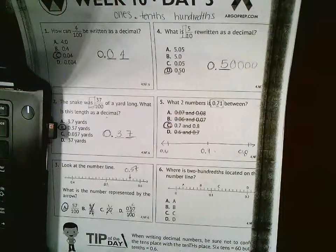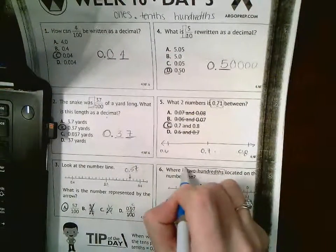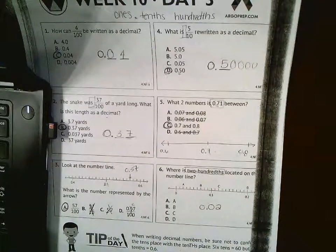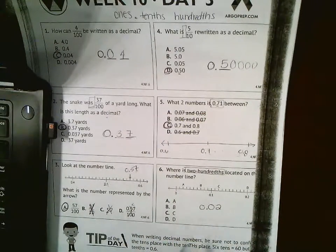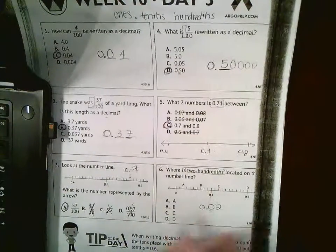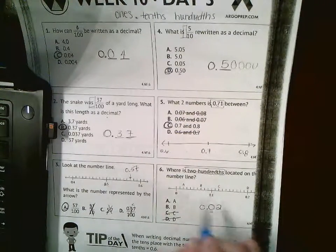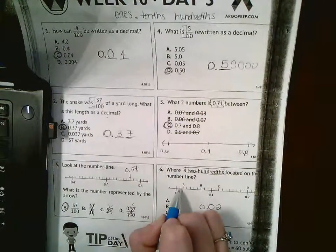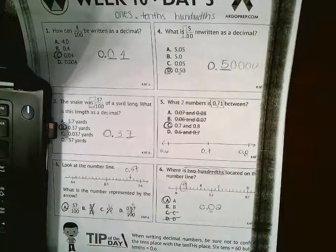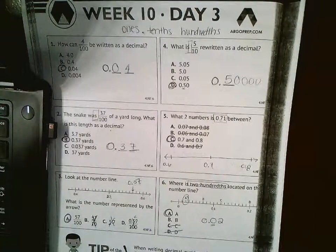And number 6: Where is 2/100 located on the number line? To help me out, I'm going to write it as a decimal—that's 2/100. So I have zero tenths, so I'm not even here yet, so I can't be C or D because those are bigger than 1 tenth, and I don't have any tenths. So I'm going to start at zero, then I have 1 hundredth, 2 hundredths, so it would be A. That's our review for Week 10, Day 3.